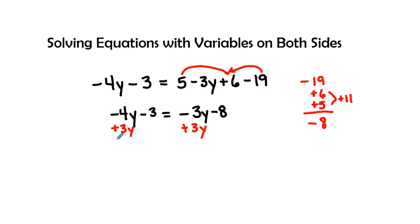Now with this 3y to both sides I have a negative y minus 3 equals, negative 3y and a positive 3y gives me 0, and then I'm going to bring down the negative 8.